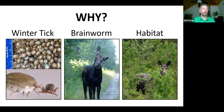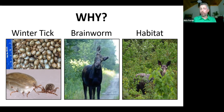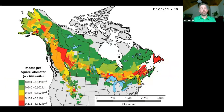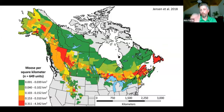So the question becomes: why haven't we seen a recovery in our moose population? There are three primary reasons — winter tick, brain worm, and changes in moose habitat. Before getting into those, I want to provide some perspective on our moose densities here in the Northeast and in Vermont relative to the rest of North America.